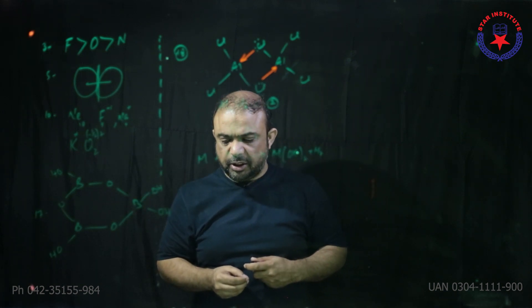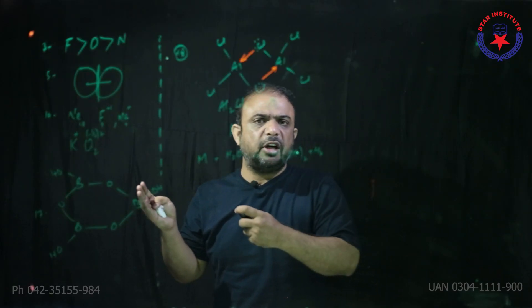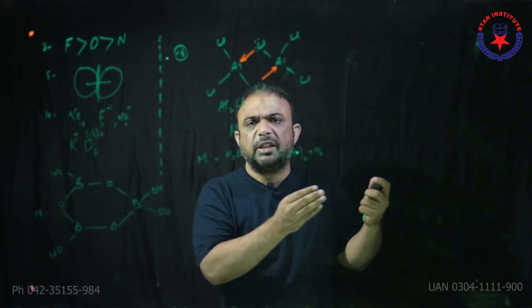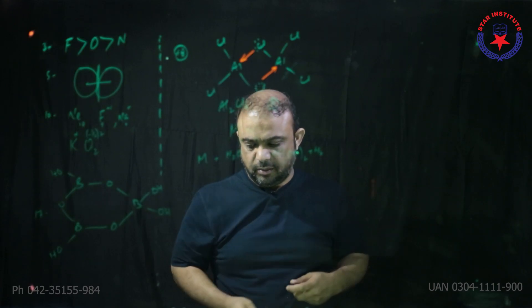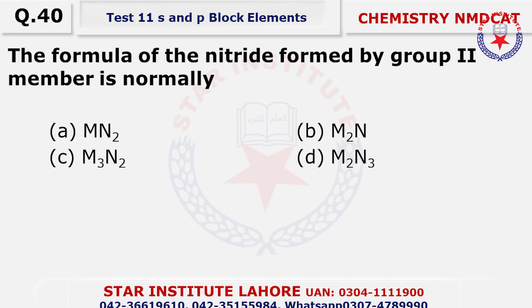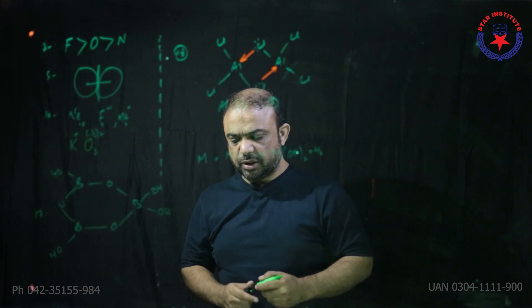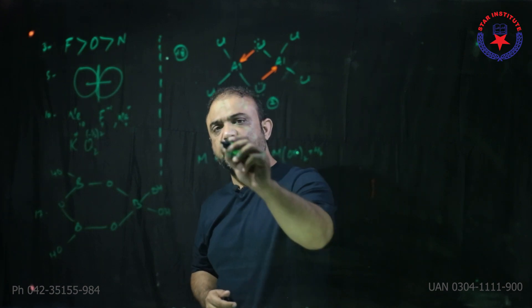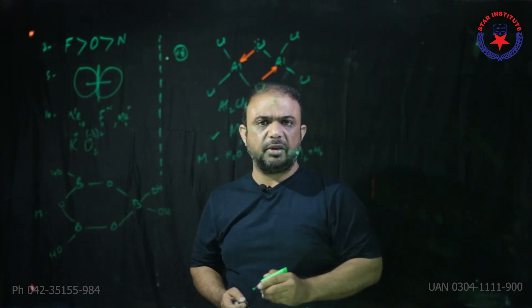Question number 39: Which has the highest ionization potential value? The ionization potential increases left to right, so fluorine should have the maximum. Question number 40: The formula of the nitride form — for the last question the formula of metal nitride is M₃N₂. Thank you very much, I hope this discussion has been beneficial for your national MDCAT exam.